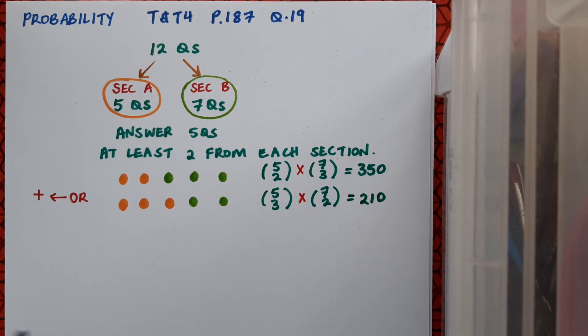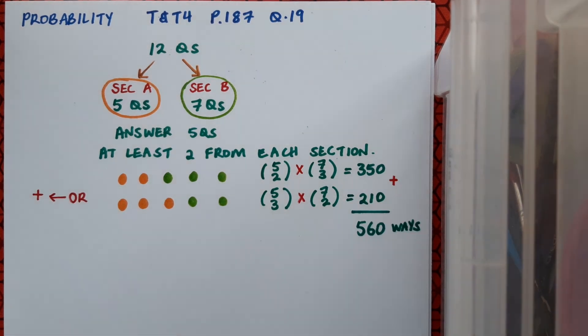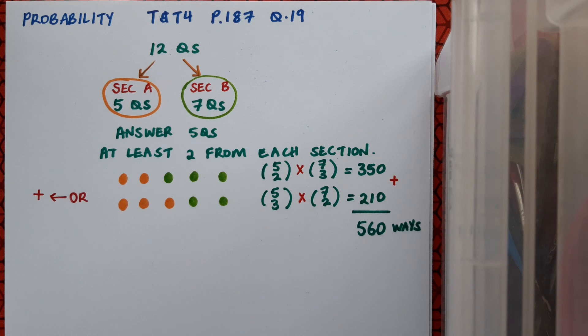Like I said earlier, I want the first option or the second option, which means I need to add. So I'm going to add up these two results to get my final number of options. My final answer is that there are 560 different ways where I can choose five questions from the paper where I answer at least two from each section.